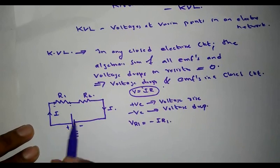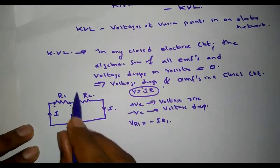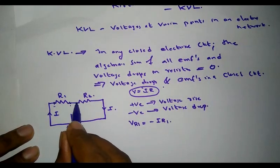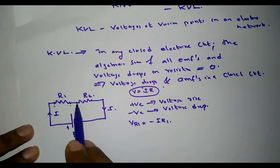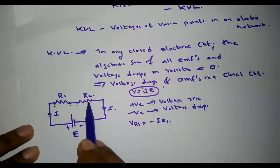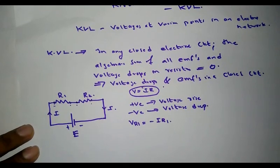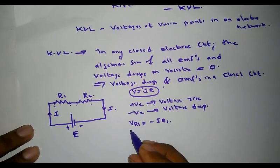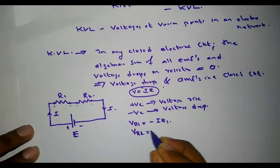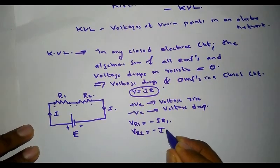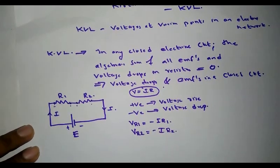Similarly, if current I flows through resistor R2 from one point to the next, the first point is at higher potential and the second is at lower potential. Therefore, the voltage drop in R2 can be represented as minus I·R2.